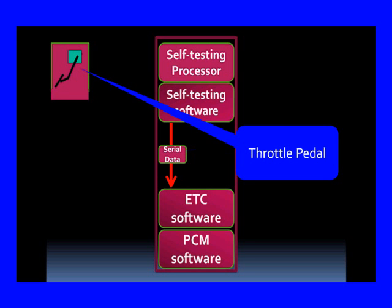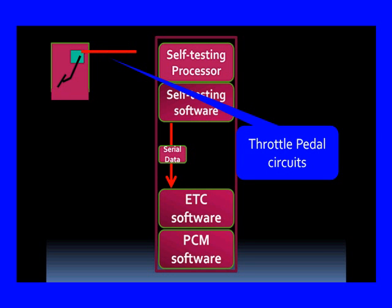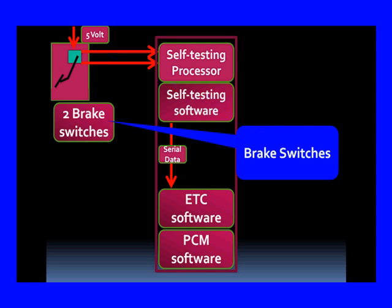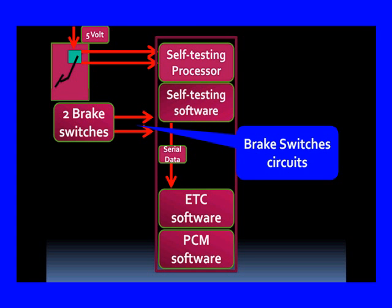Here's what's going to happen: the throttle pedal moves, and that signal goes to the self-testing processor, which forwards it on through serial data after it has examined and confirmed it's a reasonable signal. It then looks at feedback — we usually have redundancy, two signals, not just one. Why? Because we want to make sure we understand the correct position of the throttle. This is a standard sensor supplied by five volts, and we have two brake switches sending information in.